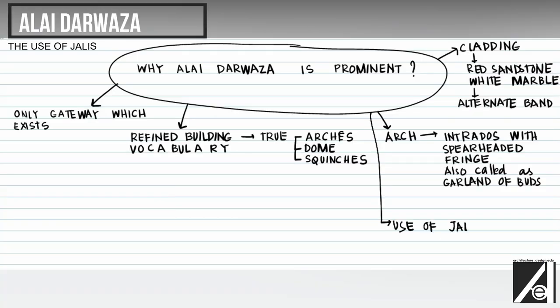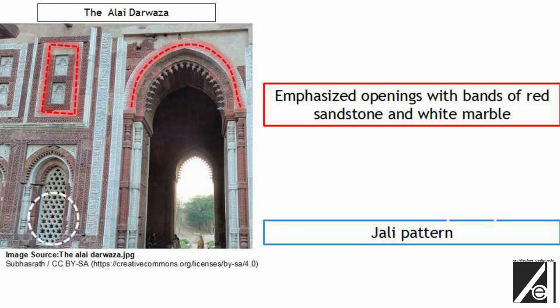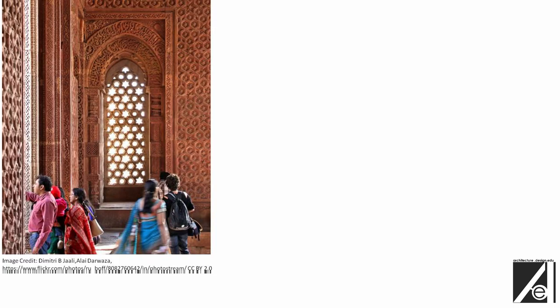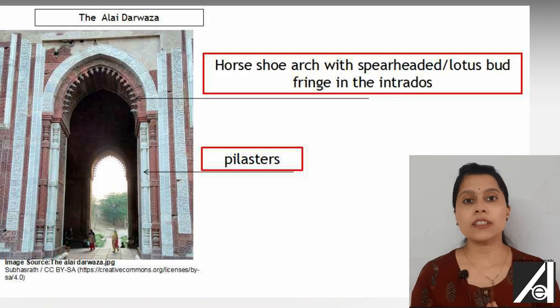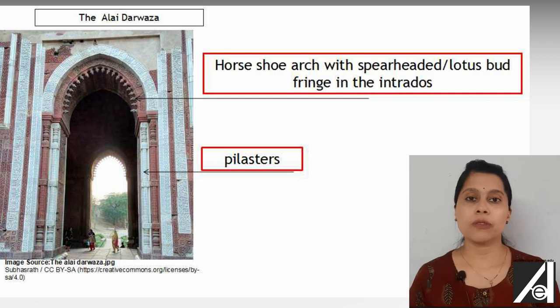The next important feature is the use of Jalis — fretted screens. Intricate Jalis with patterns of hexagons and stars were carved into red sandstone and fitted into the openings. This is also a very unique feature. The Jalis allowed light and ventilation inside, keeping the interior of the cubical structure quite well lit.